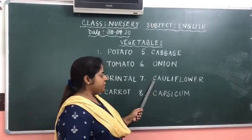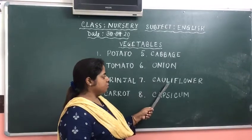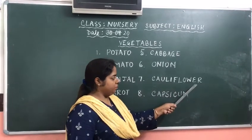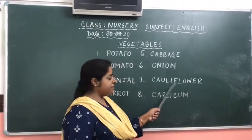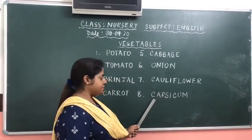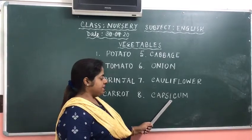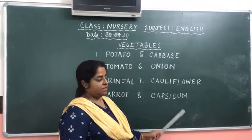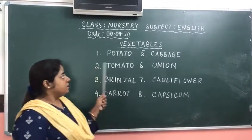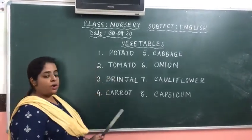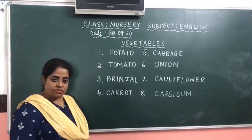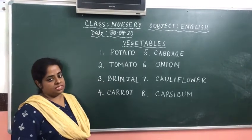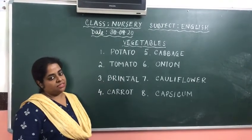Cauliflower. C-A-U-L-I-F-L-O-W-E-R. And capsicum. C-A-P-S-I-C-U-M. You will learn to identify all the vegetables and also learn the spellings by heart. Thank you.